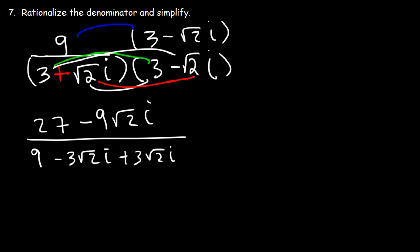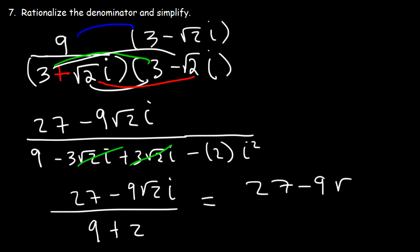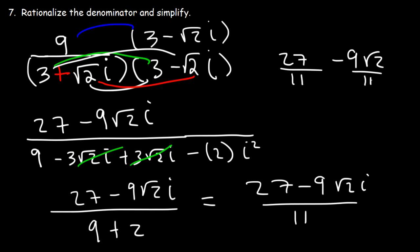And finally, square root 2i times negative square root 2i: the square root of 2 times the square root of 2 is 2, positive times negative gives a negative, and i times i is i squared. The two middle terms, negative 3 root 2i plus 3 root 2i, cancel to 0. Negative 2i squared becomes positive 2, since i squared is negative 1. And 9 plus 2 is 11. So the final answer in a plus bi format is 27 over 11 minus 9 root 2 over 11 times i.